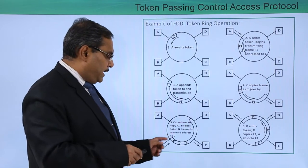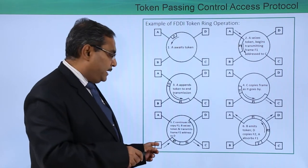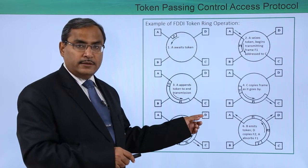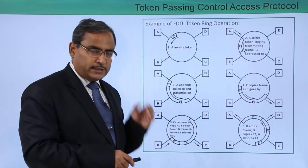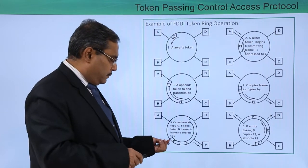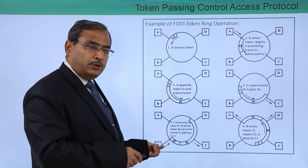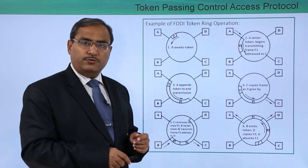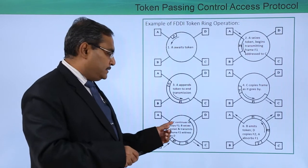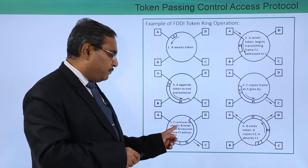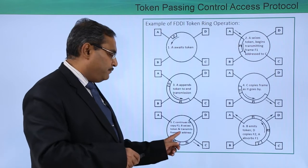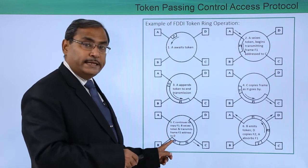When the token will be in front of B, B was having a purpose to send information to node D. B is having a plan to send a frame to node D, so B will absorb the token and it will inject F2, the frame which is intended for D. C continues to copy F1 while B seizes the token and transmits frame F2 addressed to D.